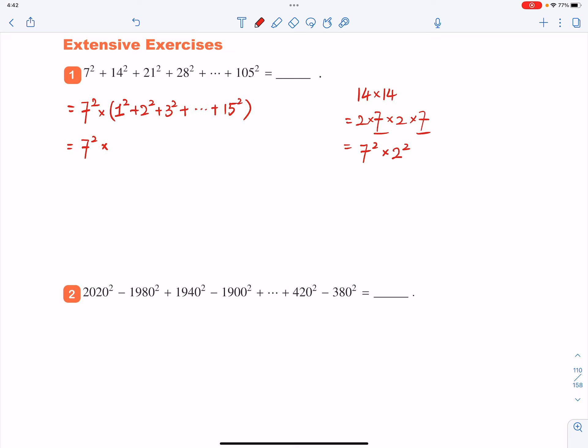The formula is that if you do the sum of all the squared numbers starting from 1, that will be n times n plus 1 times 2n plus 1 divided by 6.